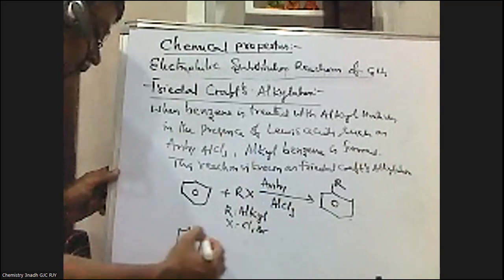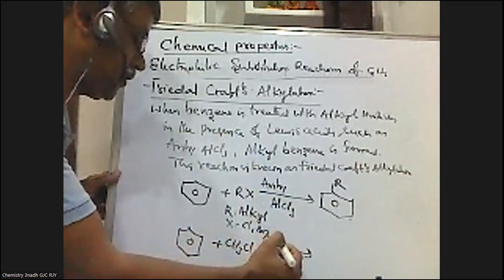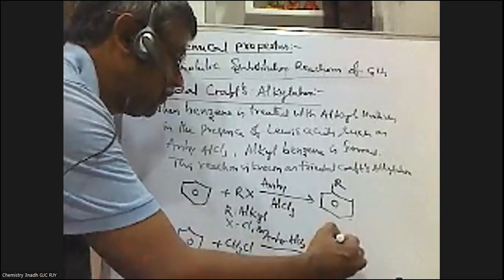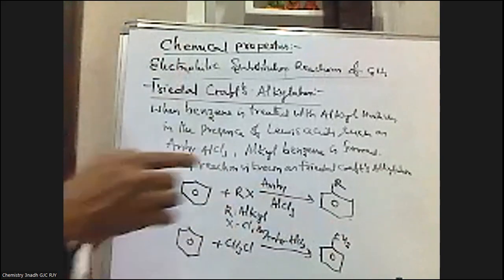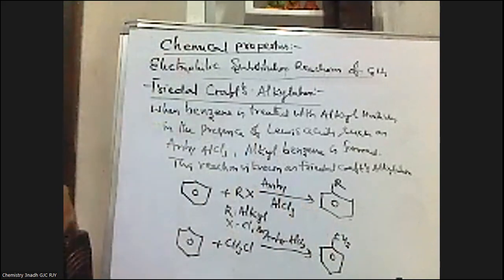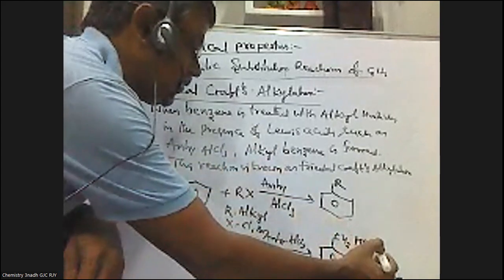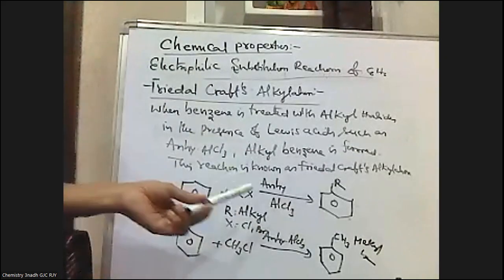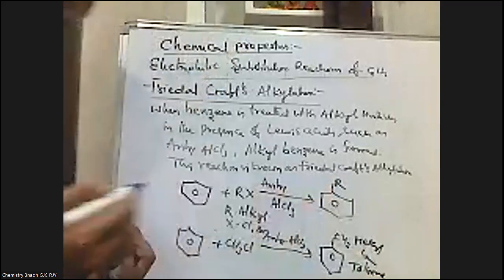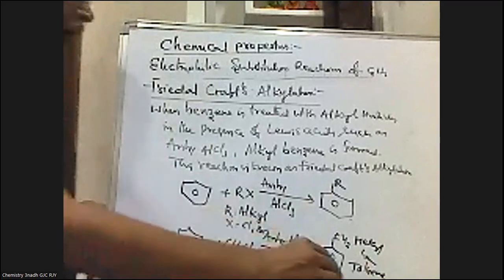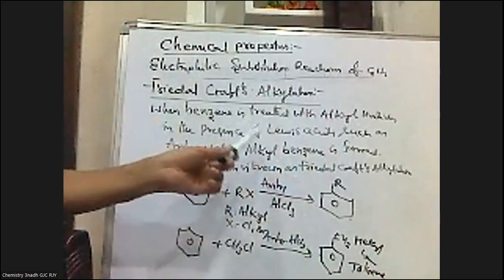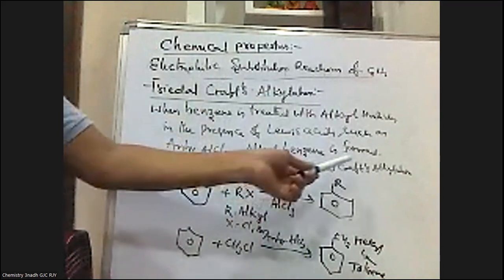For example, when benzene is treated with methyl chloride in the presence of anhydrous aluminum chloride, methyl benzene is formed. This reaction is called Friedel-Crafts alkylation. Methyl benzene is commercially known as toluene. So when benzene is treated with alkyl halides in the presence of Lewis acids such as anhydrous aluminum chloride or ferric chloride, alkyl benzene is formed — this reaction is known as Friedel-Crafts alkylation.